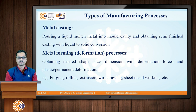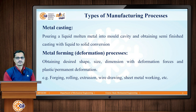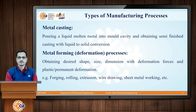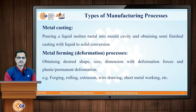The next type of basic manufacturing process is metal forming, also called deformation processes. The basic principle involved in metal forming is obtaining and giving the desired shape, size, and dimensions to a given piece of raw material with the help of deformation forces like compressive forces, tensile forces, shear forces, or a combination of these. These forces produce permanent or plastic deformation, giving the desired size, shape, and dimensions. Examples of metal forming processes are forging, rolling, extrusion, wire drawing, and sheet metal working.